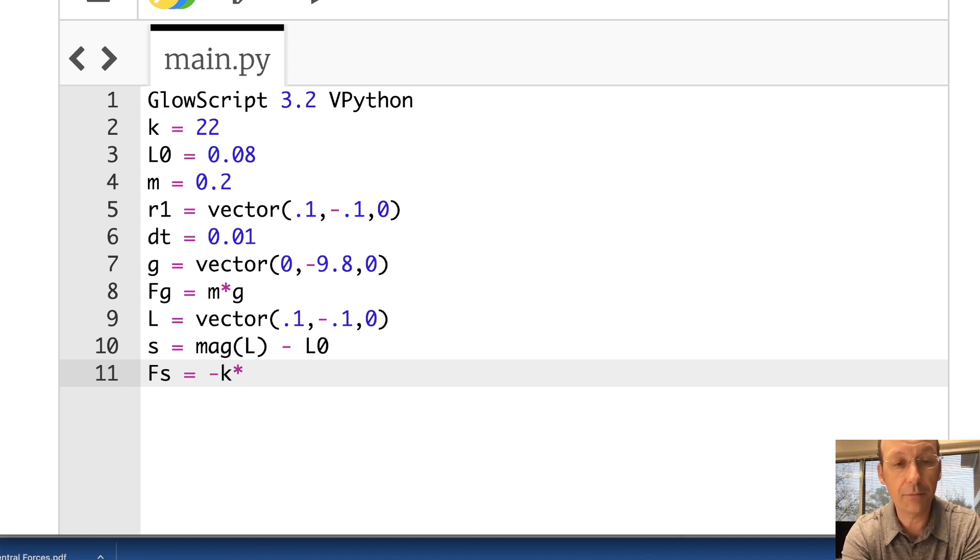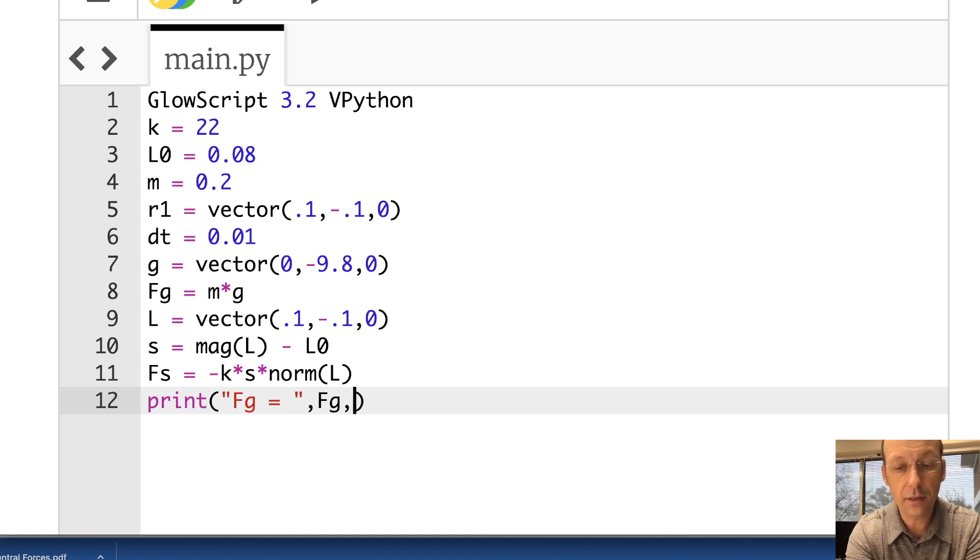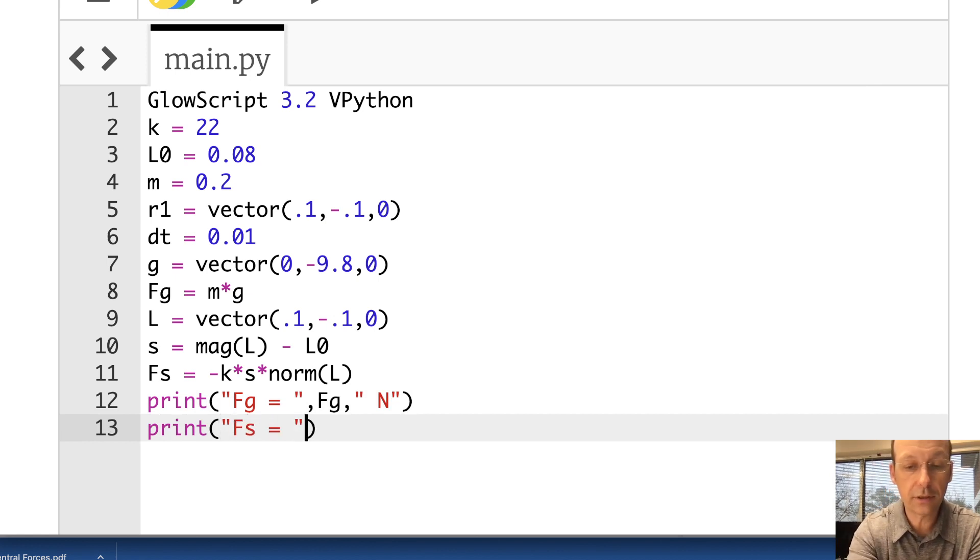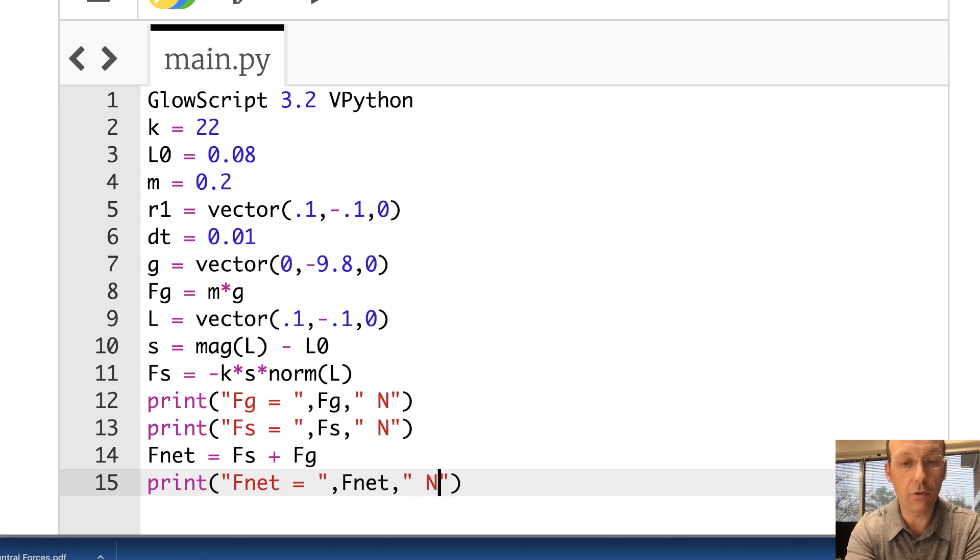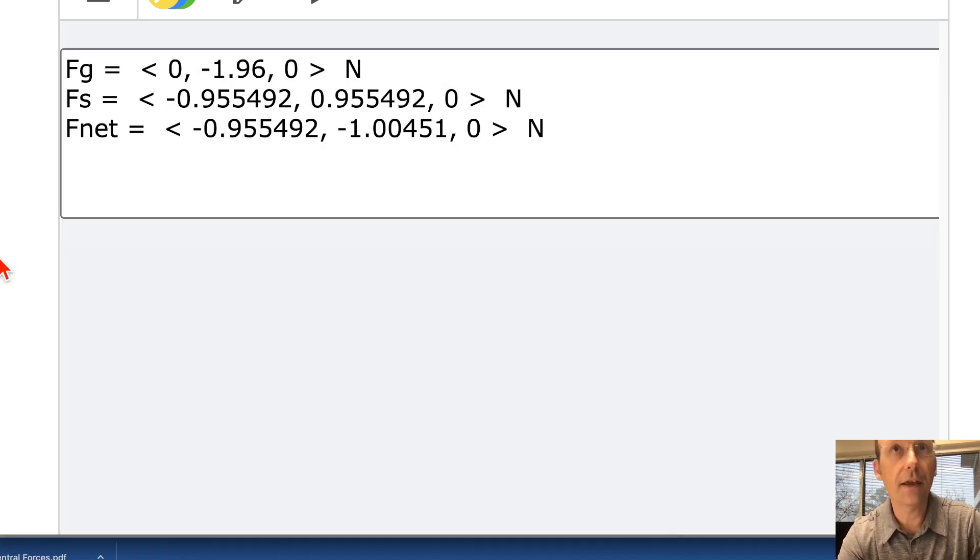Now, I can calculate the spring force. Fs is negative K times the stretch times the unit vector in the direction of L. So there's a built-in function for that, norm L. Now, let's just print it all out. So I'm going to print FG equals FG. Print Fs, the spring force, Fs in Newtons. Print F net equals, let's calculate F net. F net equals Fs plus FG. And then I can put it right here, F net in Newtons. Run that thing. And there you go. There's my gravitational force. There's my spring force. And there's my total force. That was the first part.